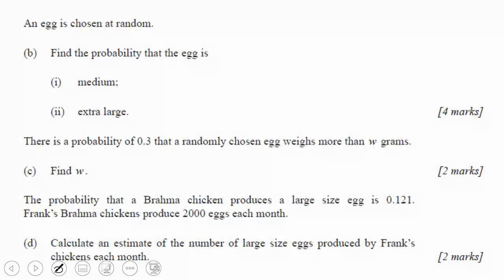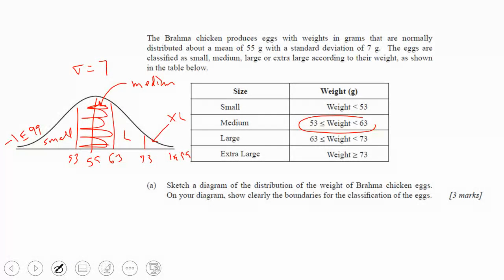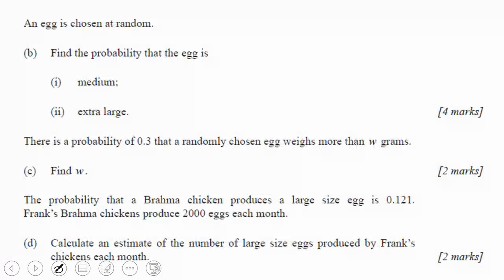So it says find the probability that the egg is medium. So if we go back to our picture, the egg being medium is 53 to 63. So we're going to do norm CDF, 53, 63. The mean was 55, and the standard deviation was 7.